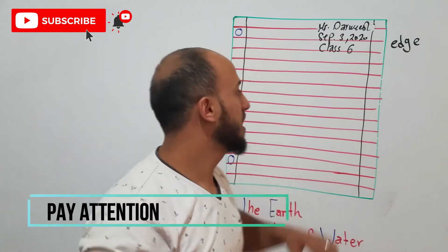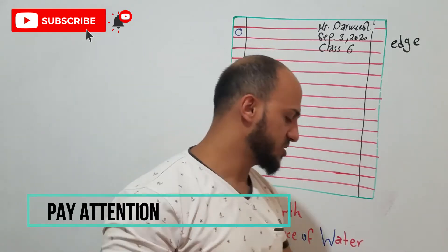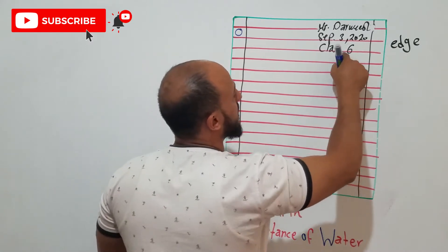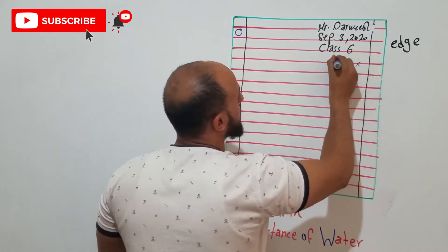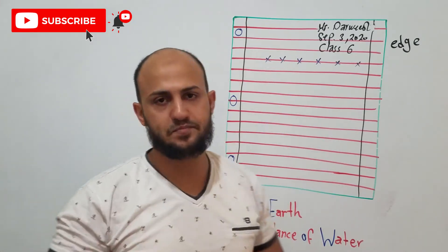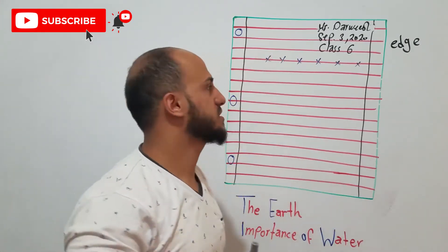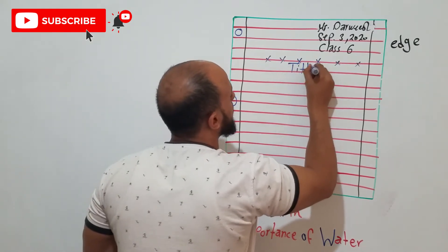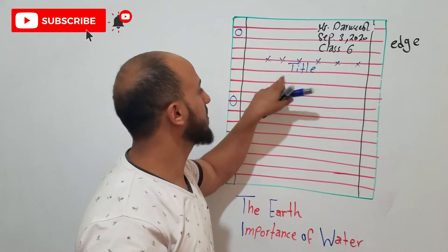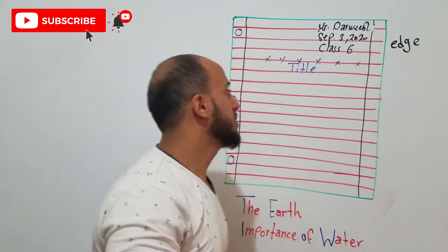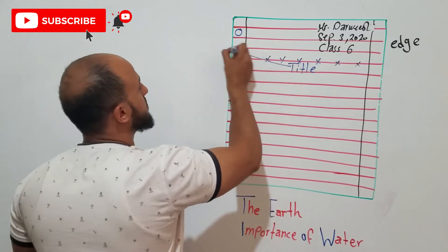Now I want you to pay attention. If your paper is lined like this, you need to understand one thing. The line after this, we don't write on it. Don't write on it. You go to the next. So here, you start writing your title. Your title must be in the middle of the paper.